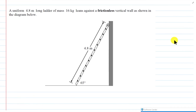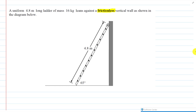Welcome back physics fans. This is Ladder Physics - Physics 12 Static Equilibrium, and here's a provincial exam question to start off with. A uniform 4.8-meter long ladder of 16 kilograms leans against a frictionless vertical wall as shown in the diagram. The two questions are: draw the free body diagram, and what is the coefficient of friction necessary to keep it in place? First, let's draw the free body diagram.